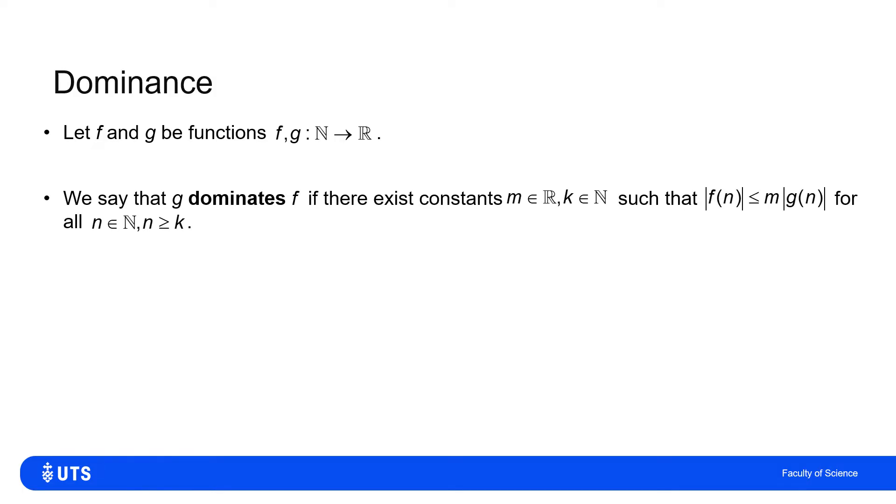I can say that the function g dominates f if I can find constants m, which is a real number, and k, which is a natural number, such that the absolute value of f of n is less than or equal to m times the absolute value of g of n for all natural numbers n greater than or equal to k.